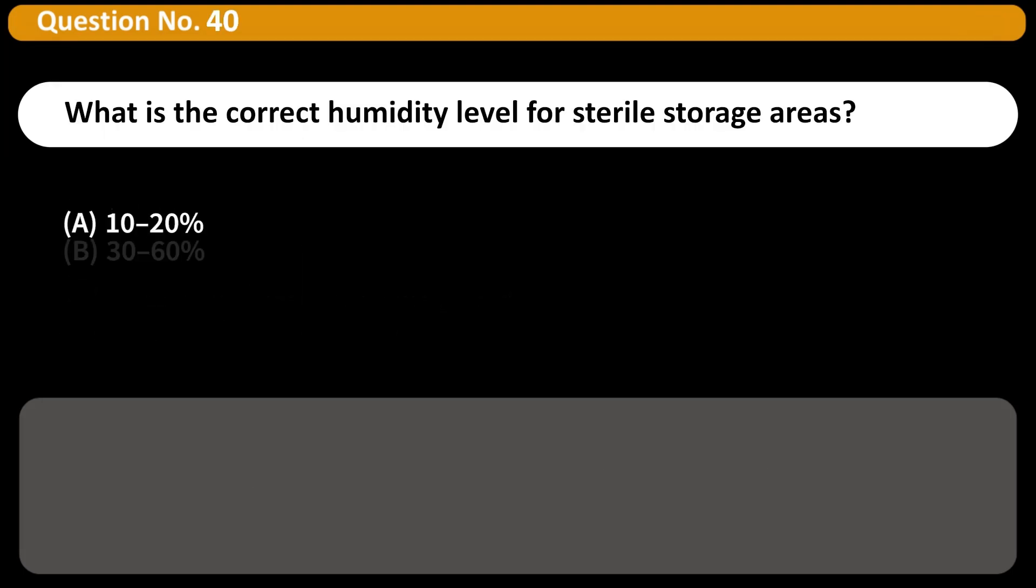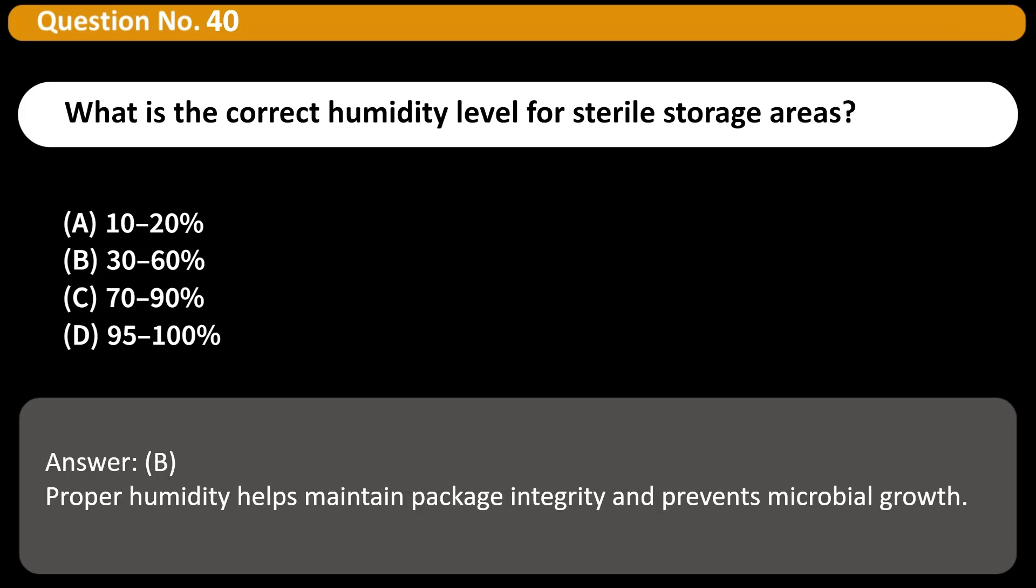What is the correct humidity level for sterile storage areas? A. 10 to 20%, B. 30 to 60%, C. 70 to 90%, D. 95 to 100%. Answer B. Proper humidity helps maintain package integrity and prevents microbial growth.